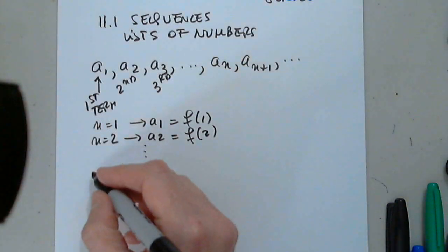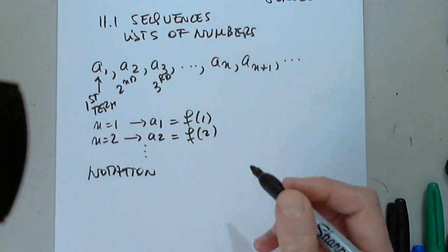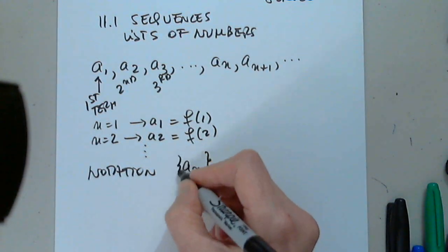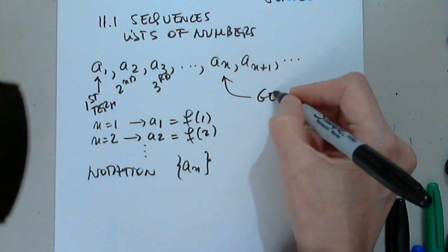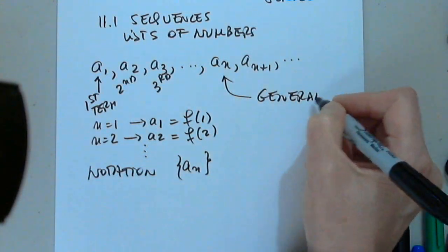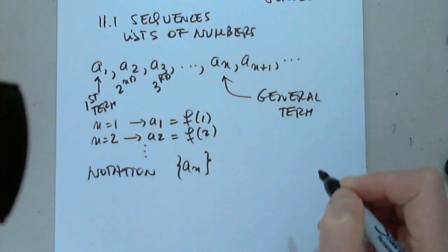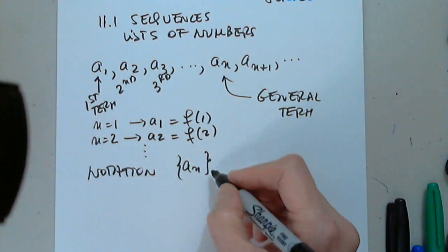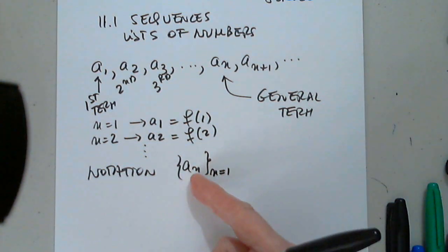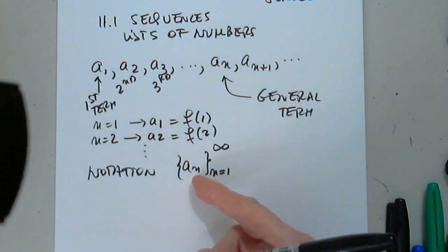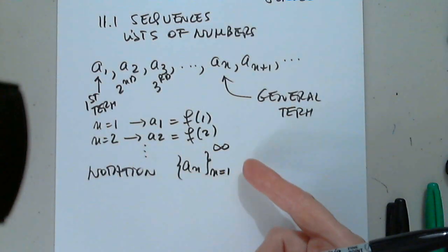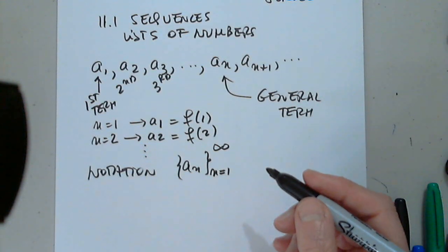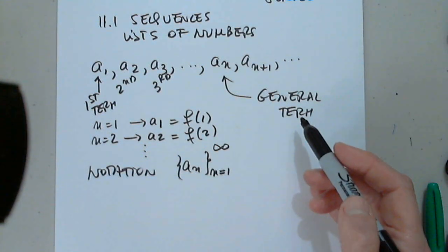What is the notation for a sequence? We like to write a sub n, just a general term. I prefer listing the lower limit for n to the upper limit for n. This is not always the case — we can start at 4, we can start at 10, depending on the sequence. But that is the general term.